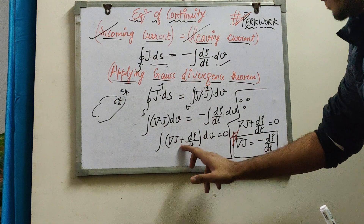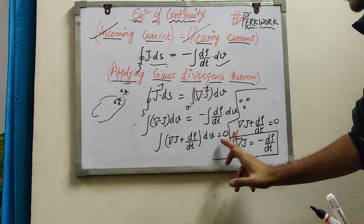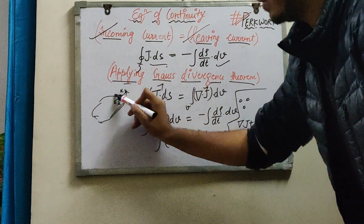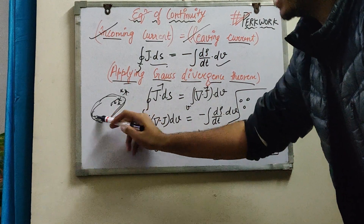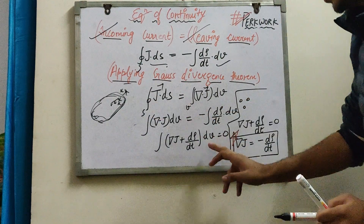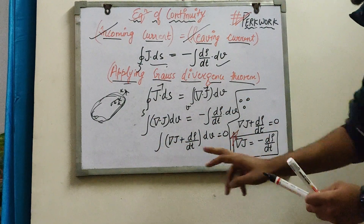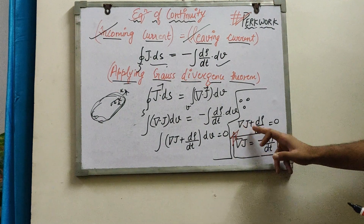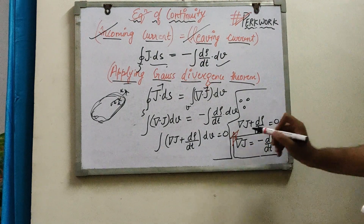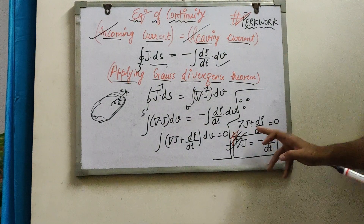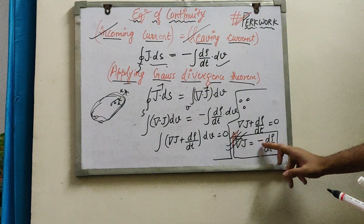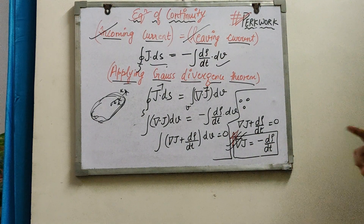Applying the Gauss Divergence Theorem, the surface integral is converted to a volume integral: divergence of J into dV equals minus dρ/dt into dV. The dV is common, so we get: divergence of J plus dρ/dt, all into dV, equals zero. Since the volume is non-zero, the quantity itself must be zero. Therefore: ∇·J + dρ/dt = 0, or equivalently ∇·J = −dρ/dt. This is the equation of continuity.